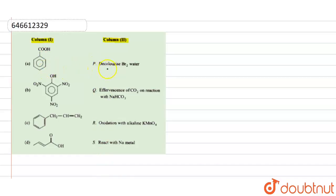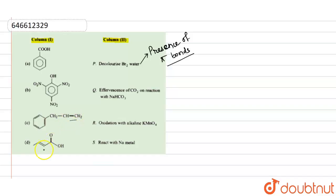The first reaction is decolorizing bromine water. Decolorizing bromine water indicates the presence of pi bonds. Alkenes and alkynes usually decolorize bromine water. Compounds C and D contain alkenes, so both C and D are linked with option P.